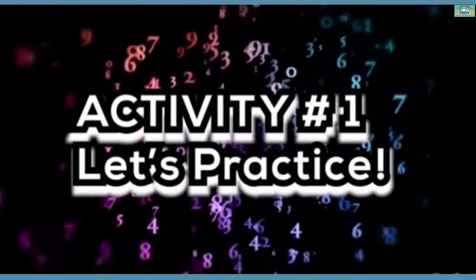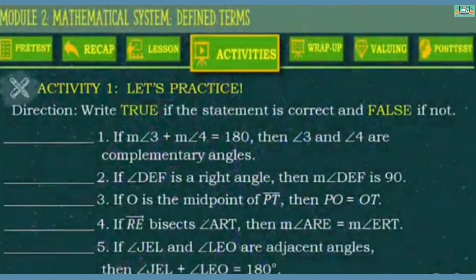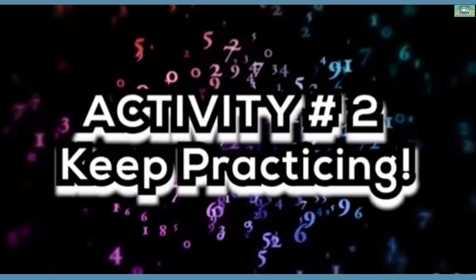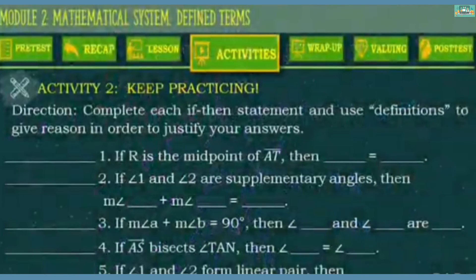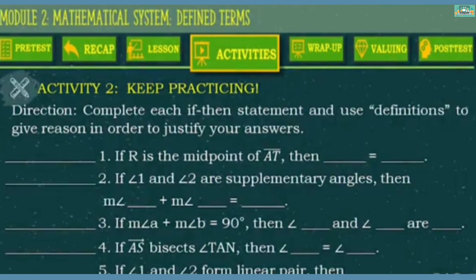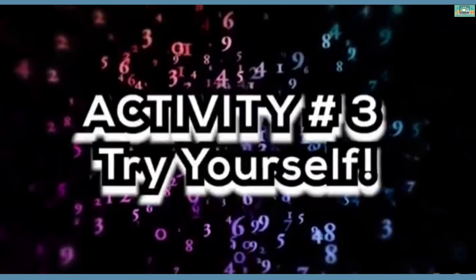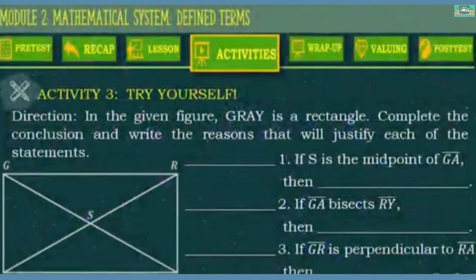Let us now answer our activities. For activity number 1, you're going to write 'true' if the statement is correct and 'false' if it's not. For activity number 2, you're going to complete each if-then statement and use definitions to give reasons to justify your answer. For activity number 3, in the given figure, GRAY is a rectangle — complete the conclusion and write the reasons that will justify each of the following statements. You may pause the video and play it once you're done answering.